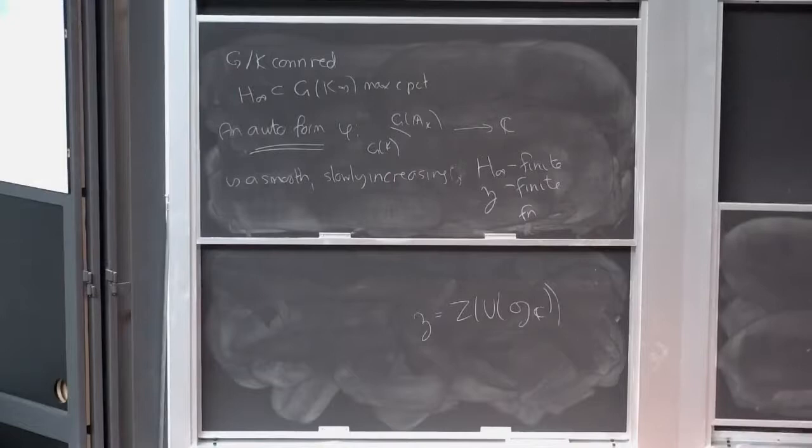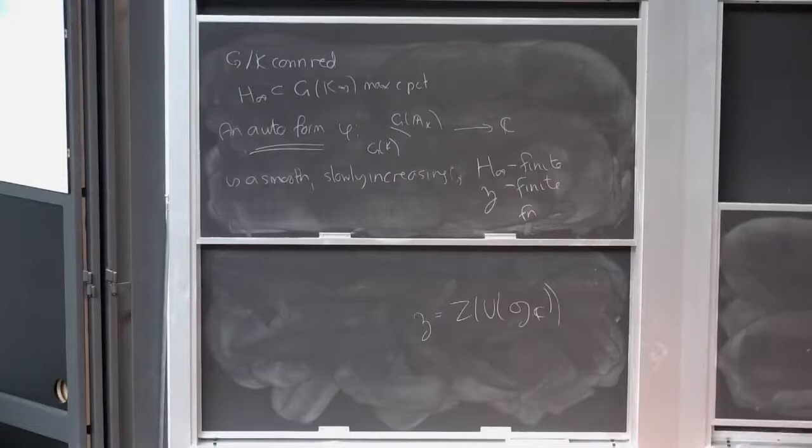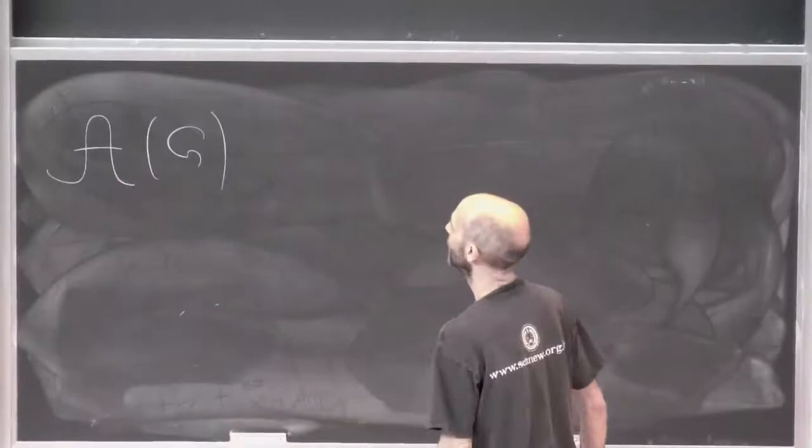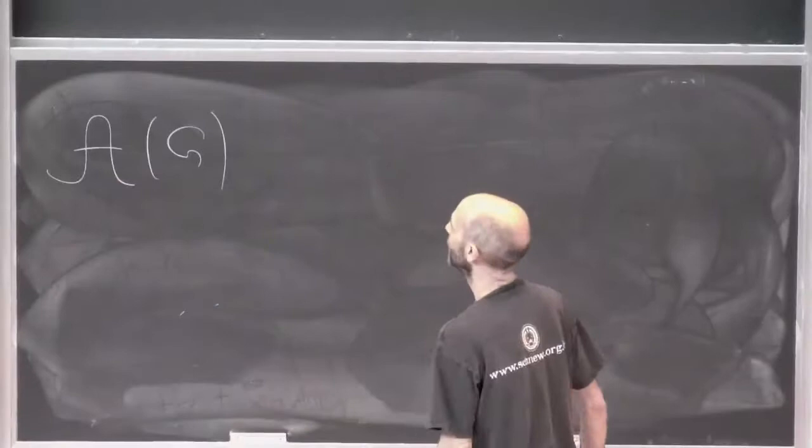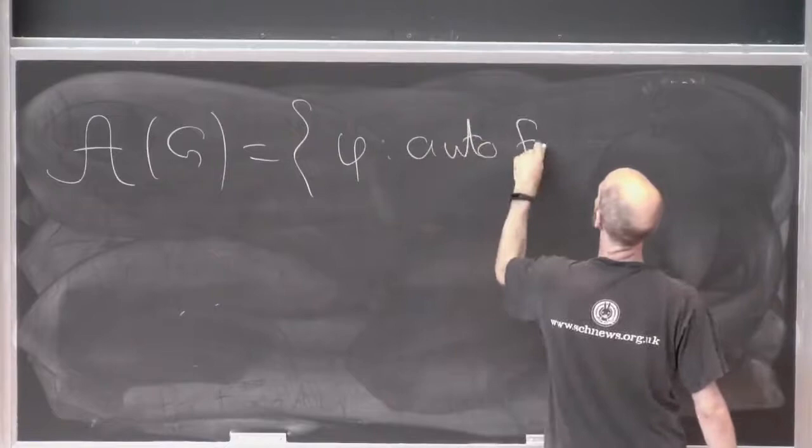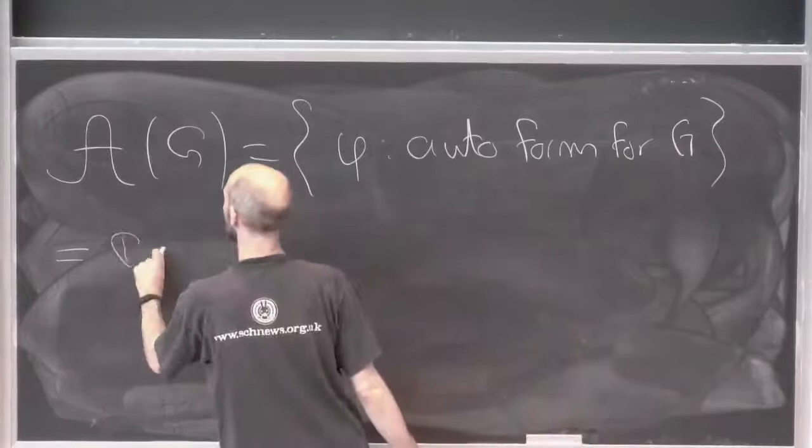Now we look at the space of all of them. We can look at A(G) — it's the set of phi which are automorphic forms for G. This is of course typically a hugely infinite-dimensional complex vector space.